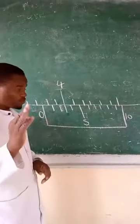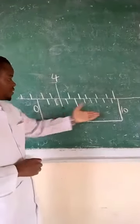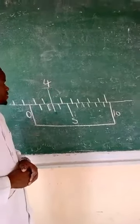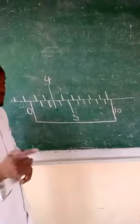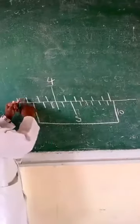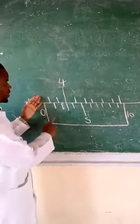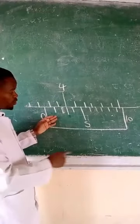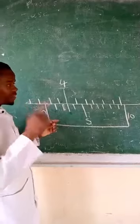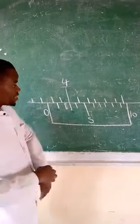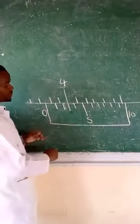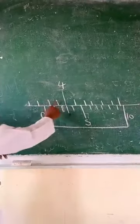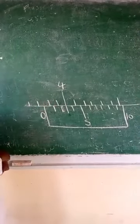That is the vernier scale and the main scale. So the thing is, first of all, you have to pick the reading on the main scale first, and then you pick the reading on the vernier scale, which you multiply by the precision accuracy of the vernier caliper.